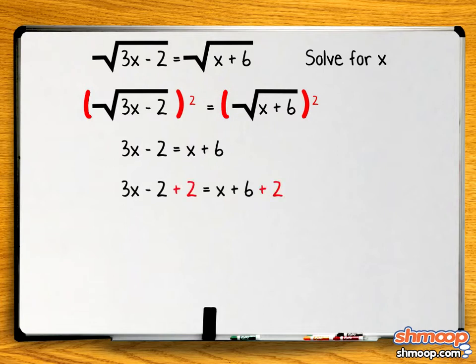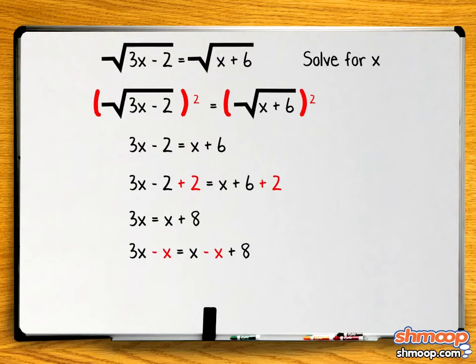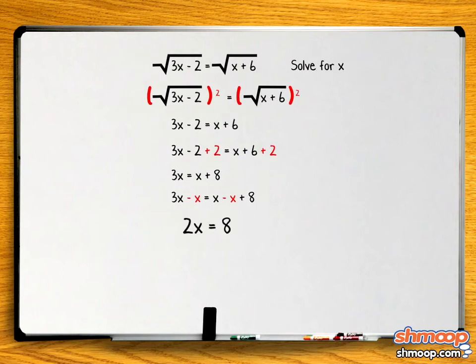Next, add 2 to both sides, and subtract x from both sides. We get 2x equals 8. Divide both sides by 2, and boom, x equals 4.